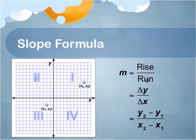It is the ratio of the rise over the run, or the ratio of this vertical distance over this horizontal distance.